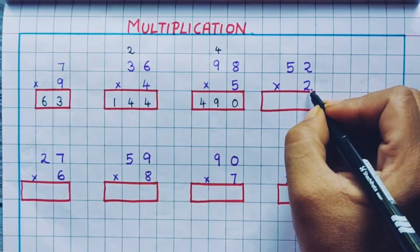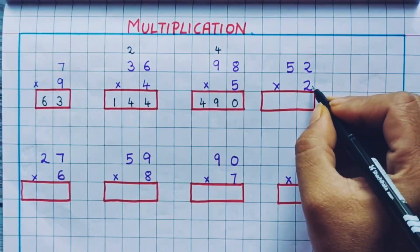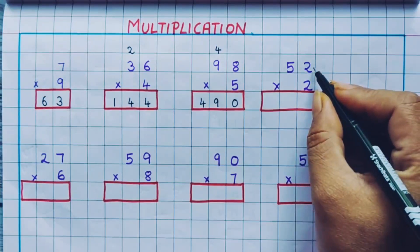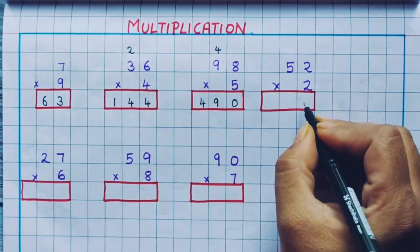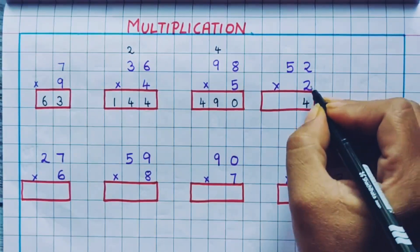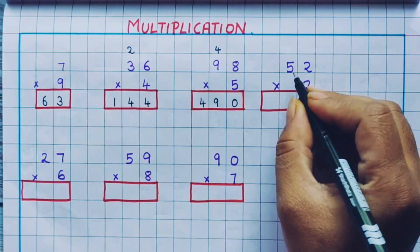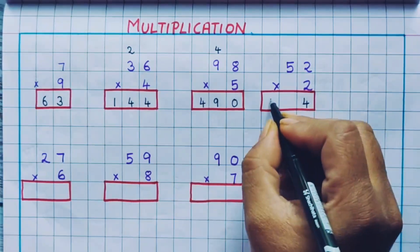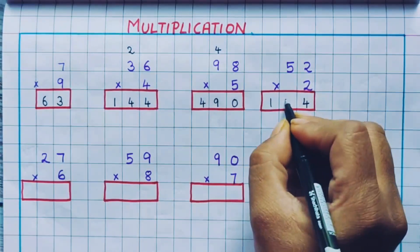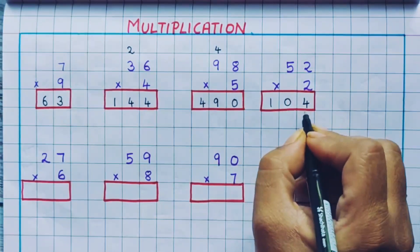Next: 52 into 2. First we multiply 2 2s are 4, so we write 4 here. Then 2 5s are 10, so we write 10 here. The answer is 104.